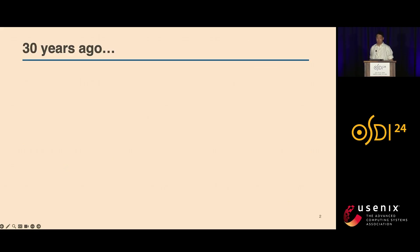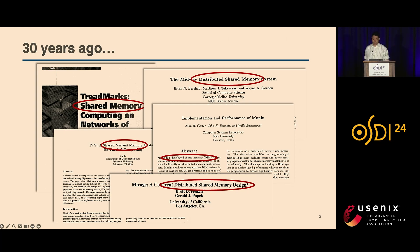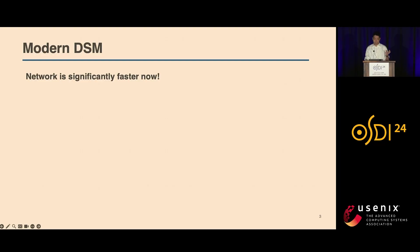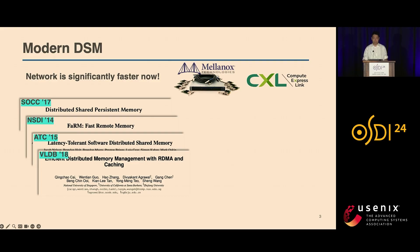About 30 years ago, DSM was a very hot topic, but it later lost its popularity because of bad performance, which was mainly due to the low network speed in the early days. The good thing is that new networking technologies, such as InfiniBand and CXL, have made the network a lot faster. Today, the network bandwidth is already approaching memory bandwidth. Therefore, people are interested again in leveraging those high-speed networks to build new DSM systems.